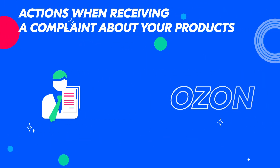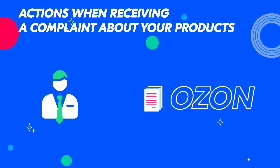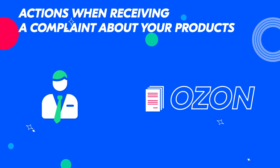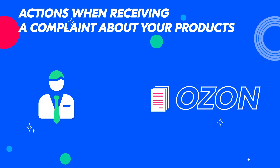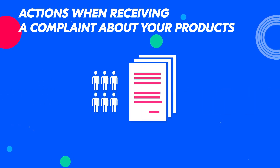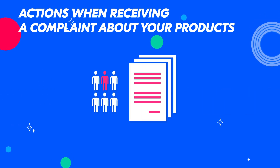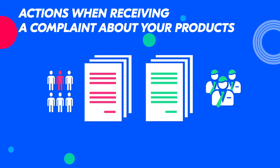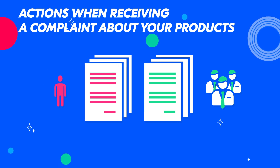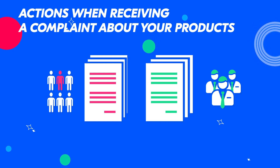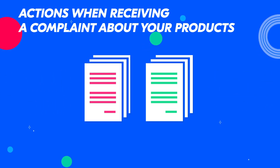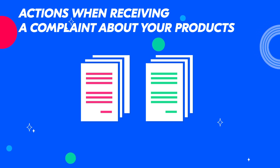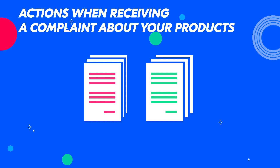Ozone may also request documents confirming your right to sell brand products in case of receiving a complaint from the brand owner, the representative, or the buyer. If a customer complains about the quality of your product, Ozone will ask you to provide quality certificates or brand documents. If a complaint is received from the brand owner or the representative, Ozone will ask you for documents confirming the right to sell brand products. After receiving the request, you need to upload the necessary documents to your personal account. If there are no documents after the expiration of the period specified in the notification, the products will be hidden.